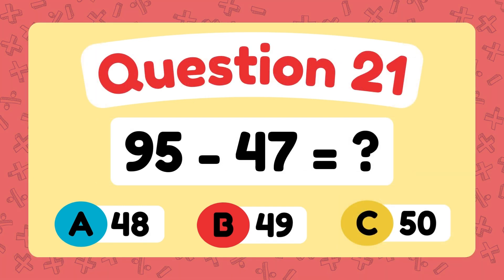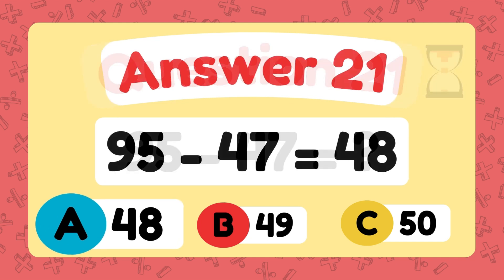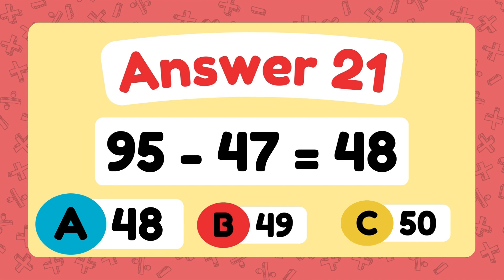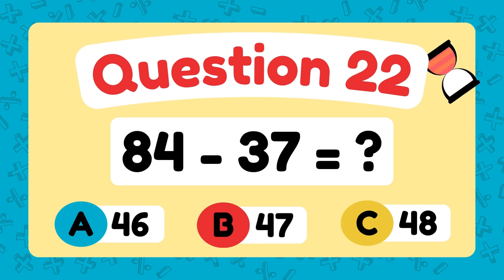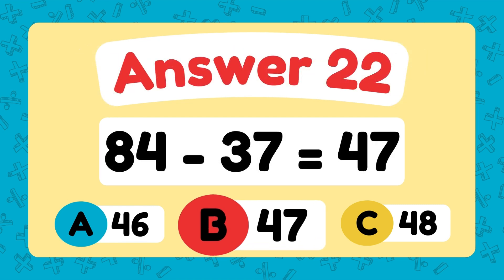What is 95 minus 47? The answer is 48. What is 84 minus 37? The answer is 47.